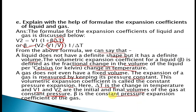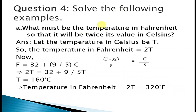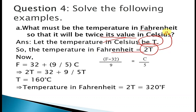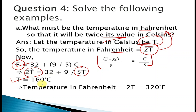Question 4, Example A: What must the temperature in Fahrenheit be so that it is twice its value in degrees Celsius? Let the temperature in degrees Celsius be T, so the temperature in Fahrenheit is 2T. Using the formula (F − 32)/9 = C/5, we substitute F = 2T and solve to get T = 160°C. Therefore, the temperature in Fahrenheit is 2T = 320°F.